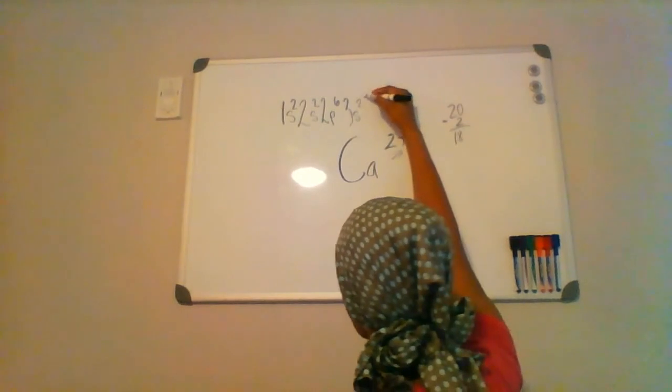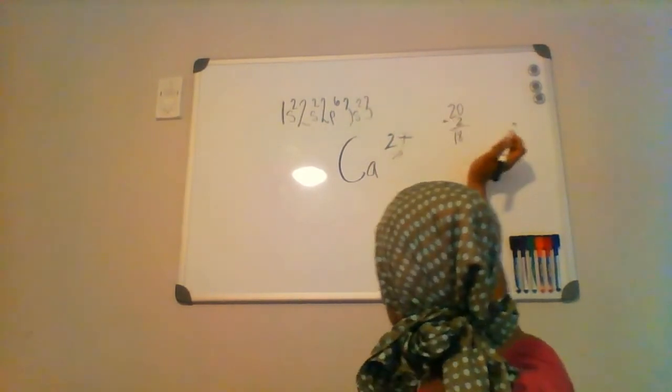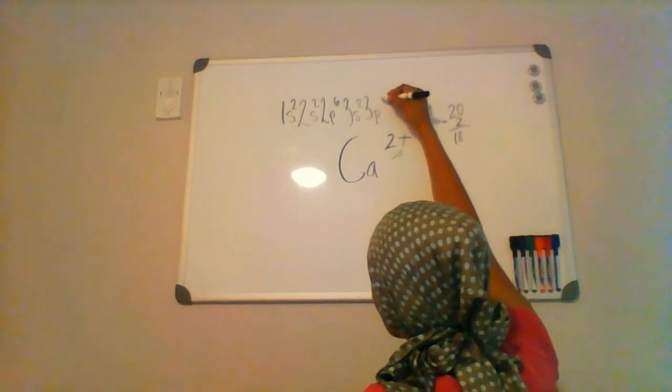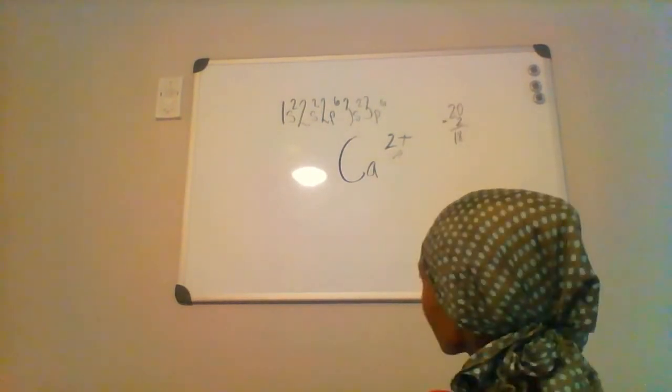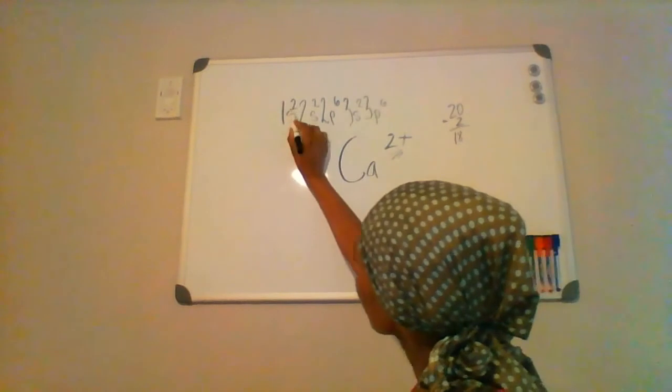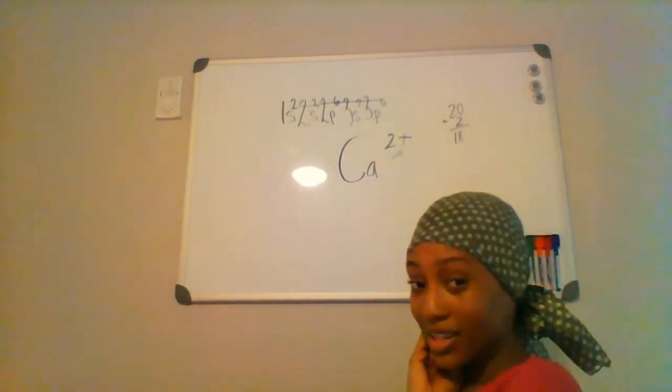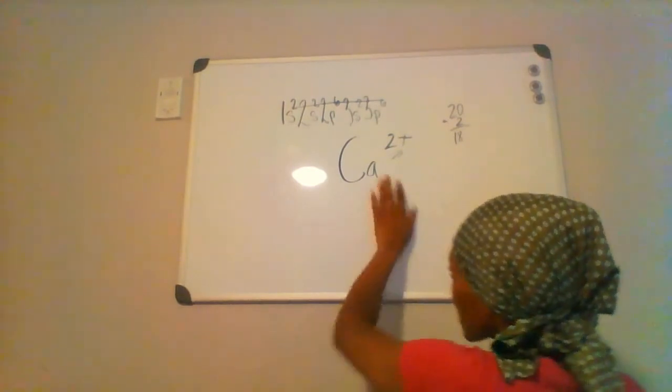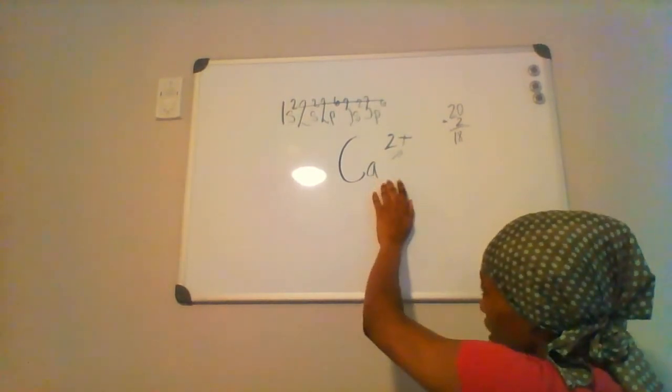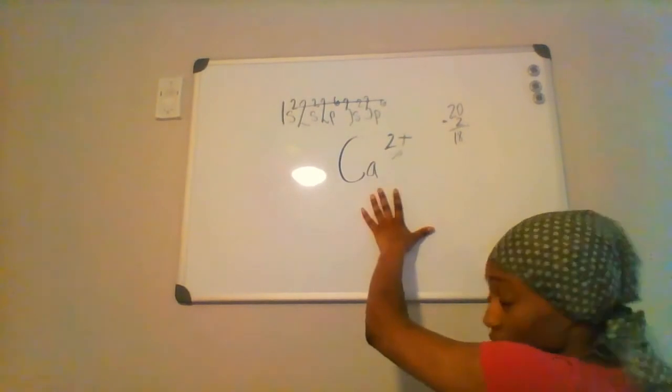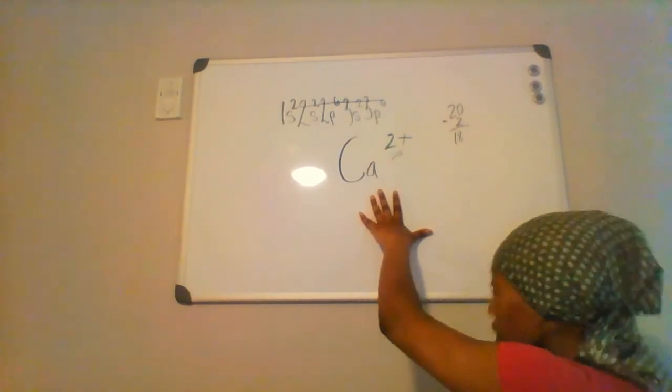So the next orbital we're going to fill up in the third energy level is the p orbital, and it's going to hold a maximum of six. And if you sum all these numbers, they give you a total of 18 electrons, which is the electron configuration for the calcium cation.